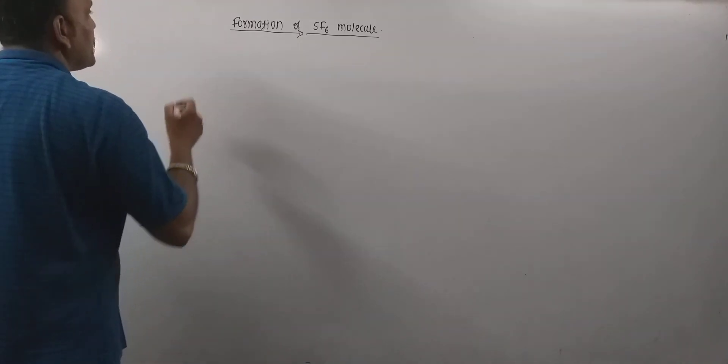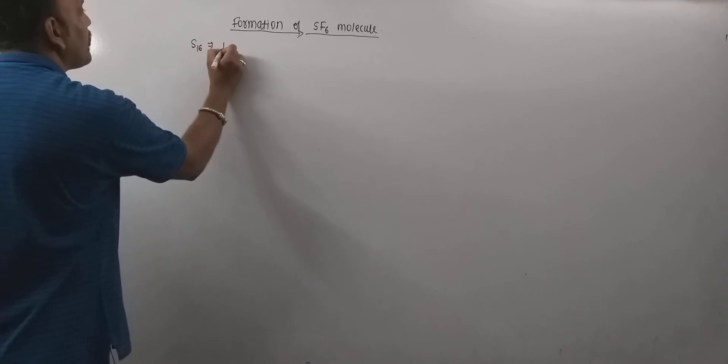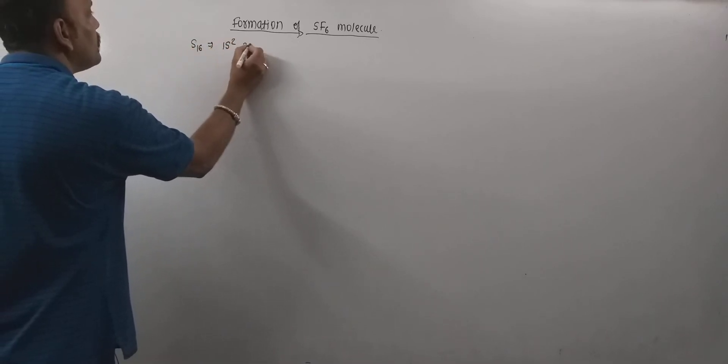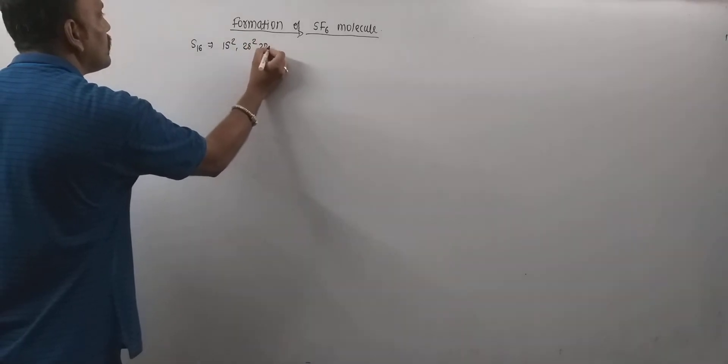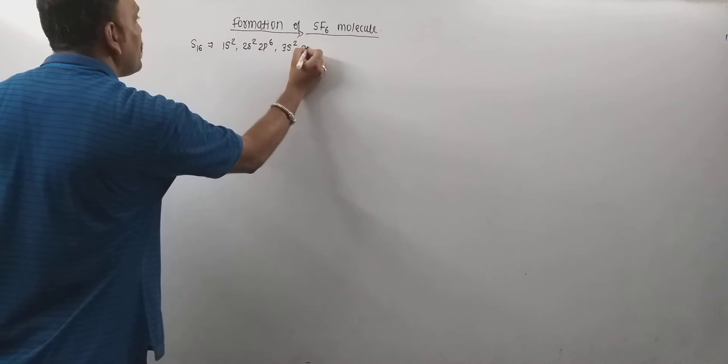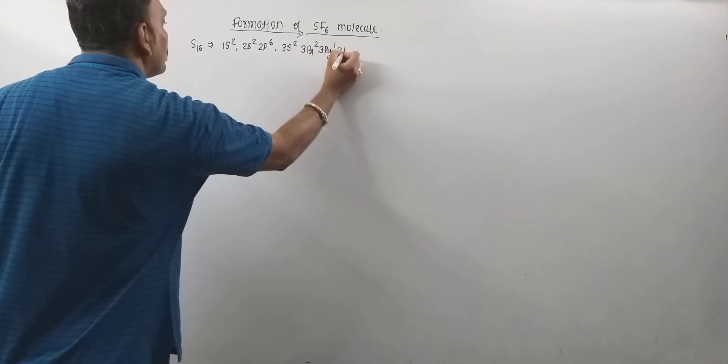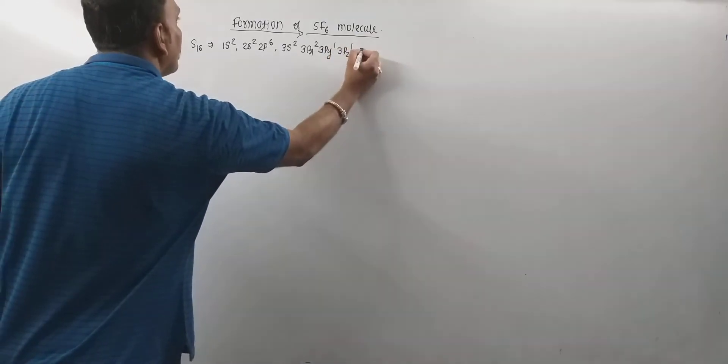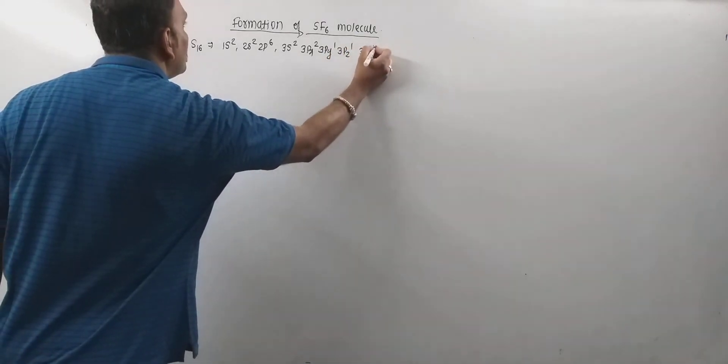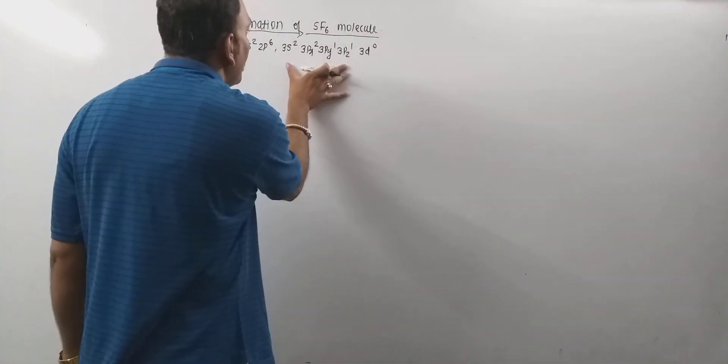Thus, let's discuss the formation of SF6 molecule. In this case, central atom is sulfur, whose atomic number is 16 and its electronic configuration is 1s2, 2s2, 2p6, 3s2, 3p4, that is 3px2, 3py1, 3pz1 and ultimately 3d0. Now, this happens to be the valence shell.